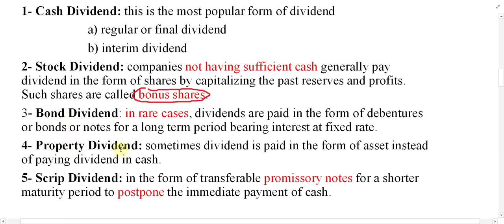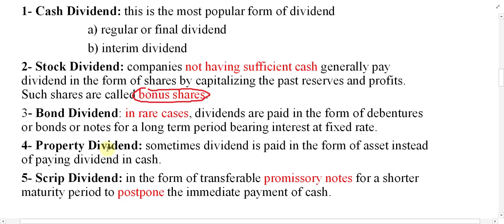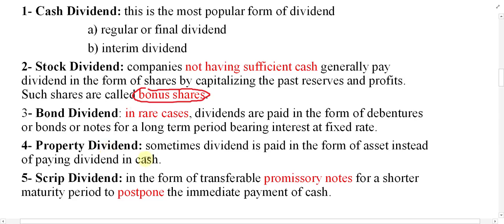The next type is property dividend. If the company distributes properties as a dividend among the shareholders, this is called a property dividend. For example, if the company has extra buildings, land, machines, or computers, instead of selling them in the market, the company may decide to distribute them among the shareholders.